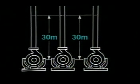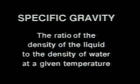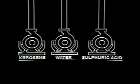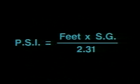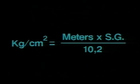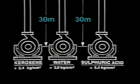Consider three identical pumps with the same impeller diameters running at the same speed, each handling a different liquid with a different density. Each pump will develop the same head of 100 feet or 30 meters, pumping kerosene, water, and sulfuric acid. Each liquid has a different specific gravity, defined as the ratio of the density of the liquid to the density of water at a given temperature. The specific gravities of these liquids are 0.8, 1.0, and 1.8. Head in feet can be converted to pressure in pounds per square inch by multiplying the head by the specific gravity and dividing by the constant 2.31. Pressure in kilograms per centimeter squared equals the head in meters multiplied by the specific gravity, divided by the constant 10.2. Thus, from the same head on three different liquids, three different pressures are created.